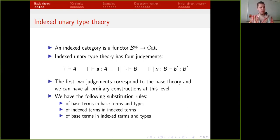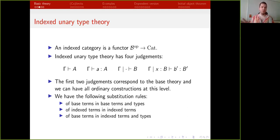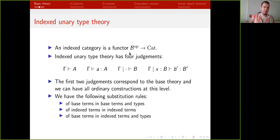To formalize this setup type-theoretically, we need four kinds of judgments. The first two correspond to our base category B — we can think of B as spaces. It can be as rich as you want: we can add all the usual type-theoretic constructions, pi types, universes, univalence, and so on. So the first level is just ordinary homotopy type theory. We need only that it's finitely complete, but you can add these structures if you want.